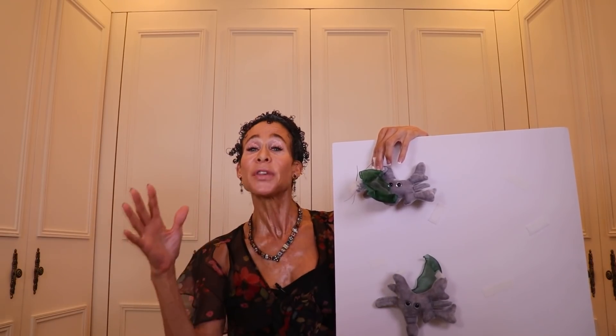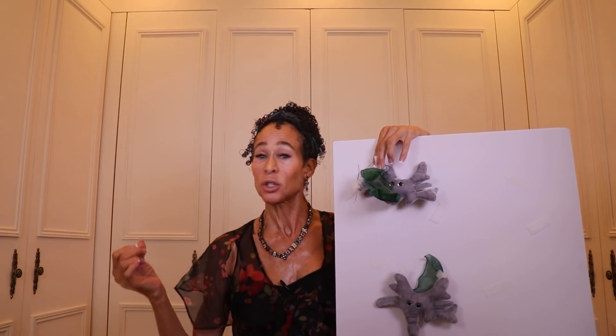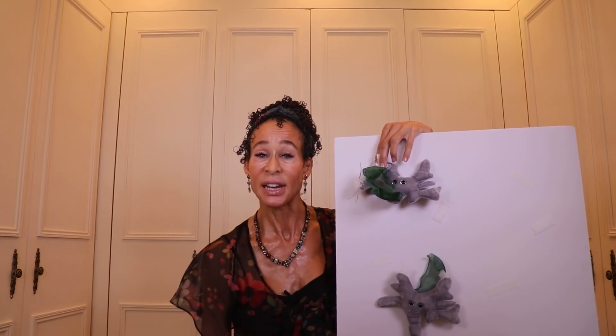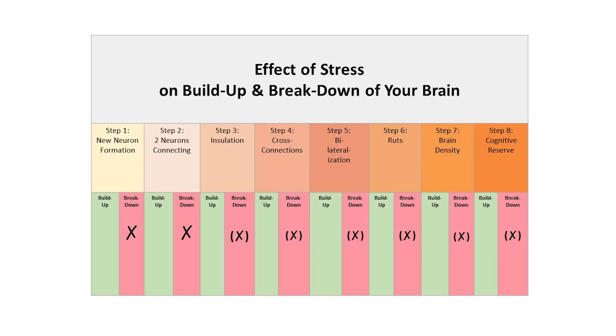Haven't you noticed how difficult it is to remember things when you're under stress? Third, chronic stress inhibits the formation of new neurons, so all the things that constitute brain buildup stop and all the things that constitute brain breakdown take over. The ultimate effect is death of brain cells. The more intense the stress, the more brain cells die; the longer the stress, the more brain cells die.